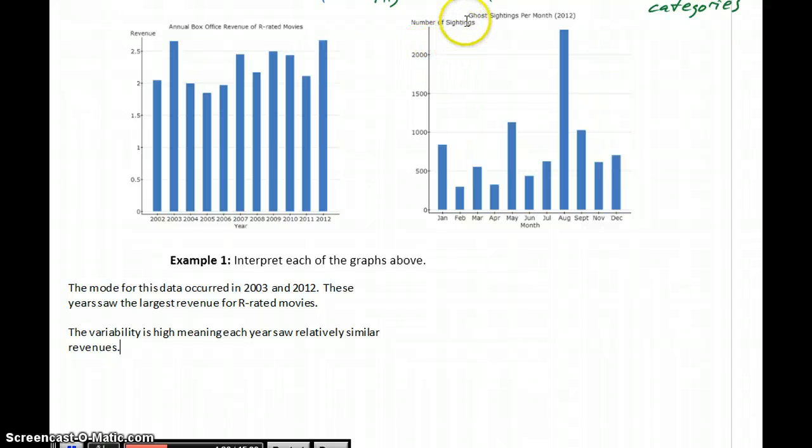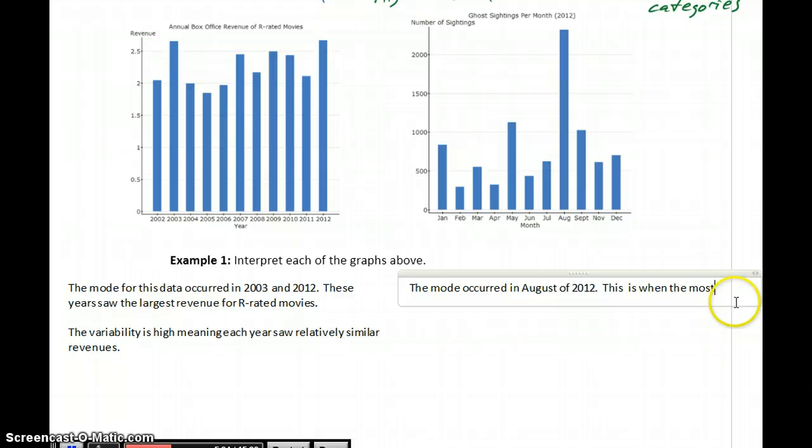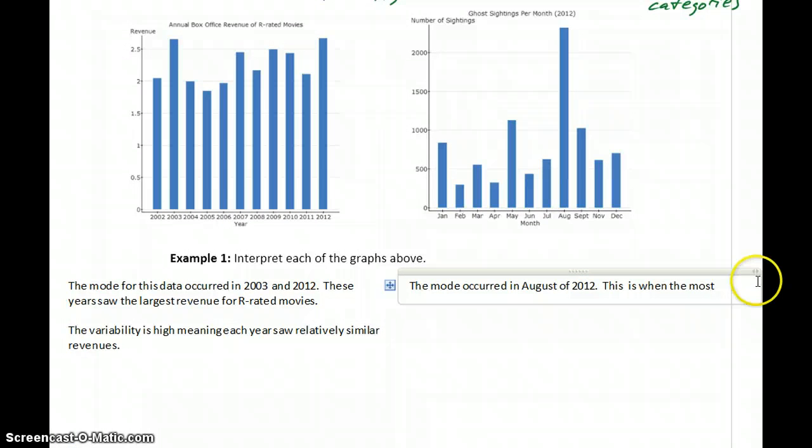We'll see some different interpretations when we look at ghost sightings per month for 2012 in the United States. In this case, we would say that our center or the mode occurred in August of 2012.